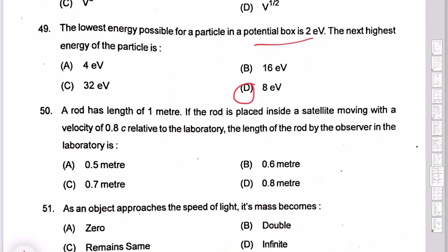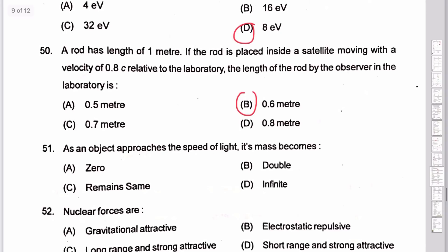Question 50: observed length is 0.6 m, rest length is 1 m, velocity is 0.8c — this is length contraction. Question 51: as an object approaches the speed of light, by Einstein's equation m = m₀/√(1−v²/c²), the mass approaches infinity. So infinity is the correct answer.